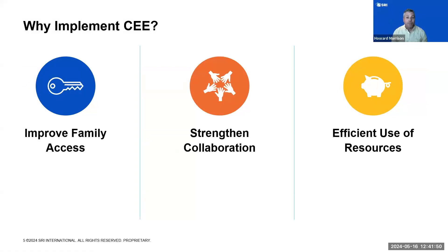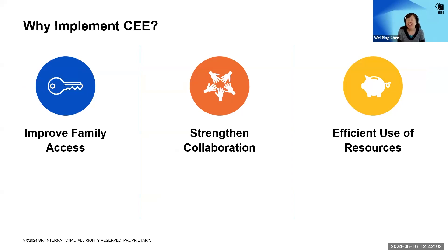There are a few main reasons why a state or local community should implement CEE. When you do CEE, families have easier and more equitable access to services, because there's one place for them to go — usually a website these days — to learn about what's available to them, to apply for services, and to have eligibility determined in one process. Access is more equitable whenever barriers to entry are reduced, and all families use the same clear and transparent process to access the same fuller set of services.